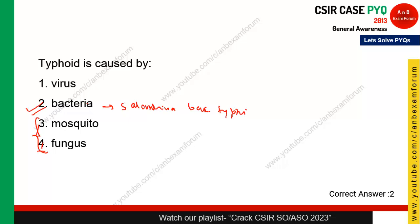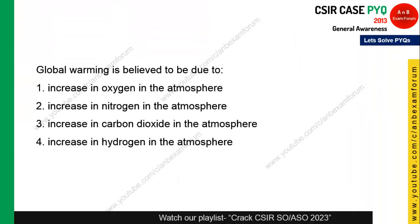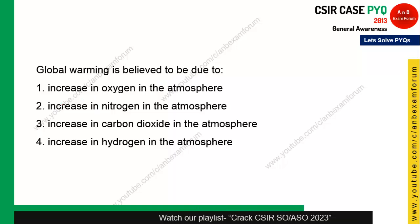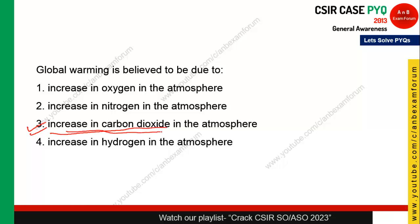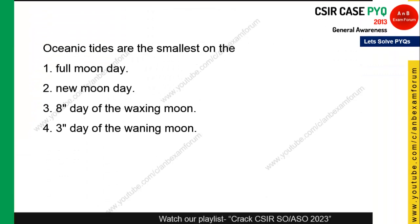The next question: global warming is believed to be due to — quite simply, it is the increase in CO₂, also called the greenhouse effect. CO₂ has the capacity to capture heat, which is why it increases global temperature. Option 3 is the correct answer.